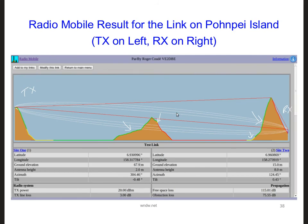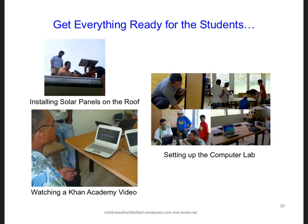Radiomobile can even tell us how high the antenna needs to be depending on the location we choose — you can see that right here in this row. To finish this design challenge, we need to make sure that the antennas have access to power. A small solar panel next to the antennas could provide the necessary power in remote areas.